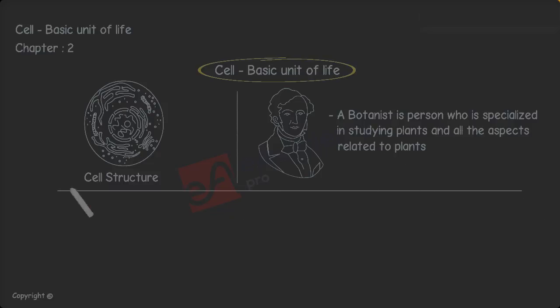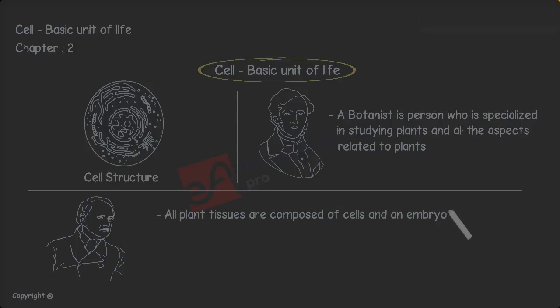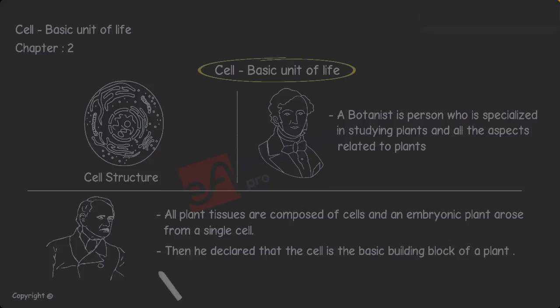In 1838, Matthias Jacob Schleiden, a German botanist, concluded that all plant tissues are composed of cells and an embryonic plant arose from a single cell. Then he declared that the cell is the basic building block of a plant. This statement by Schleiden was the first generalization concerning cells.